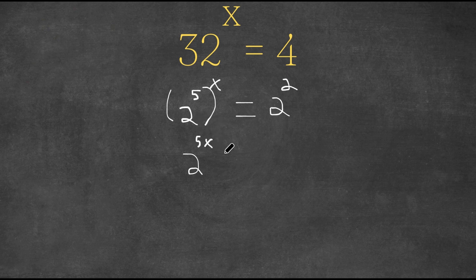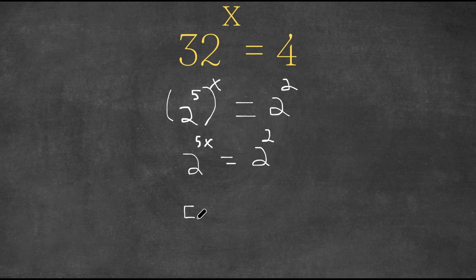So this is 2 to the power of 5x equals 2 squared. Now remember for exponentials, if you have two numbers that equal each other with the same bases, then those exponents are also equal to each other, meaning 5x is equal to 2.